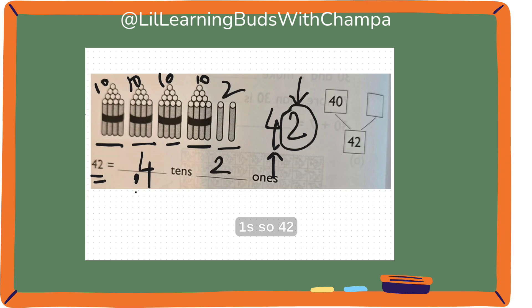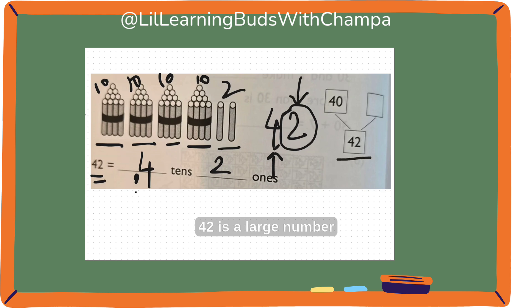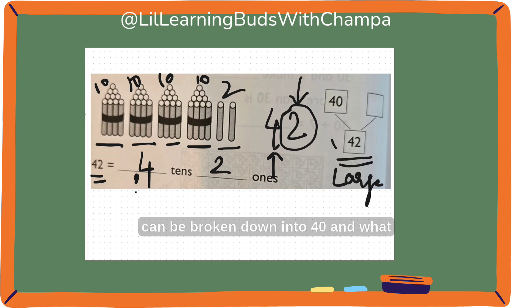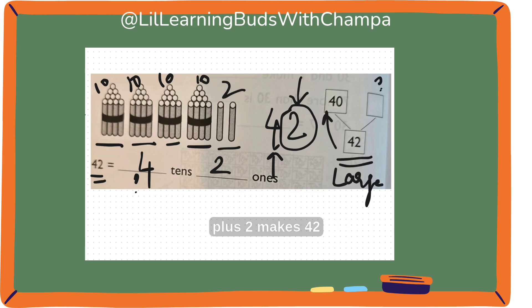So, 42: 4 tens, 2 ones. And the number bond — 42 is a large number which can be broken down into 40 and what do we add here? 2. So, 40 plus 2 makes 42.